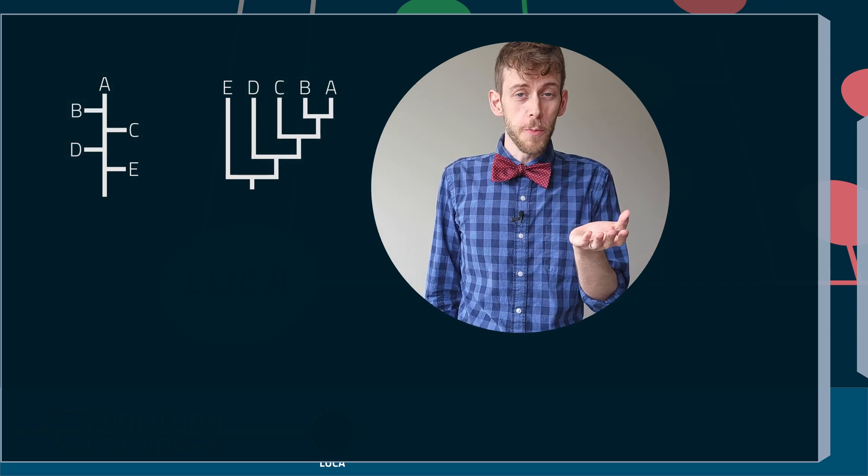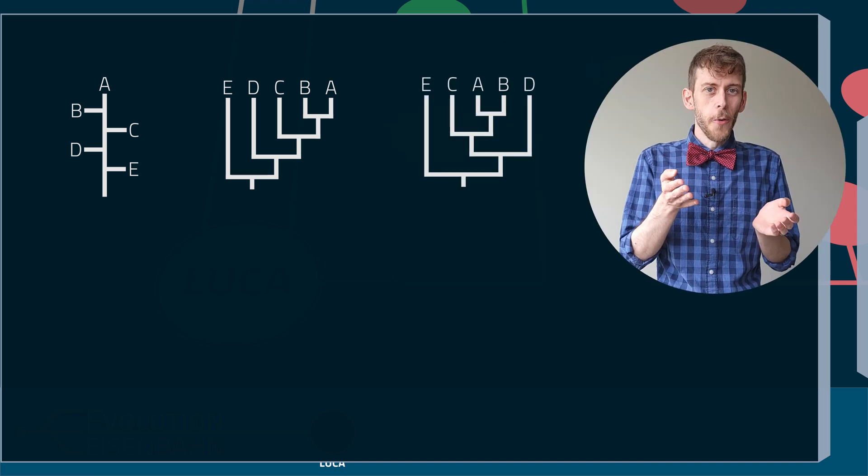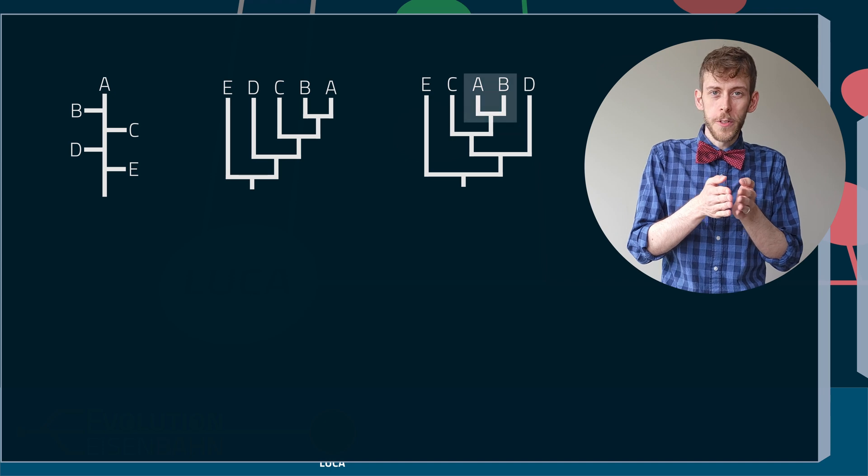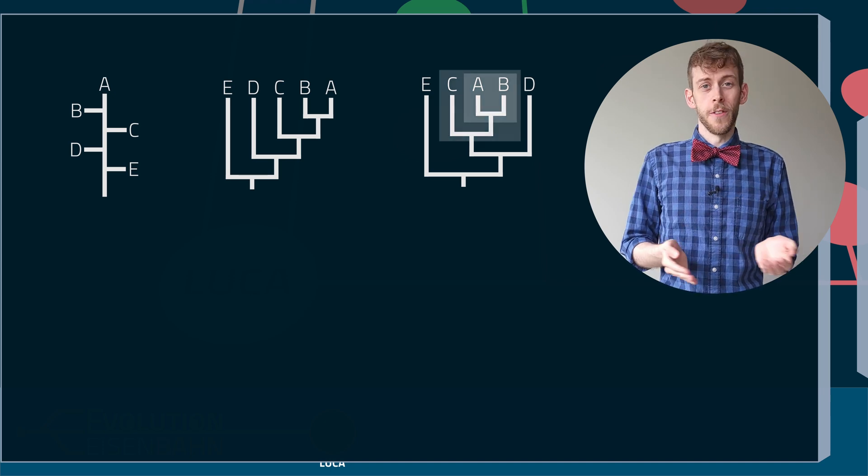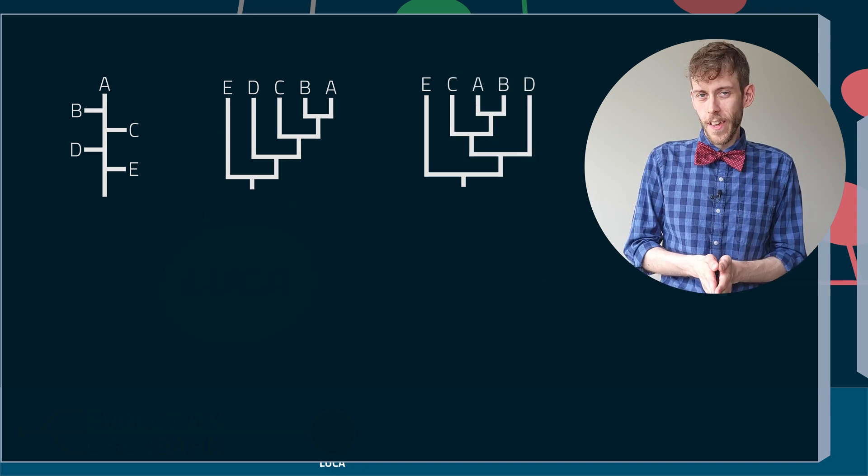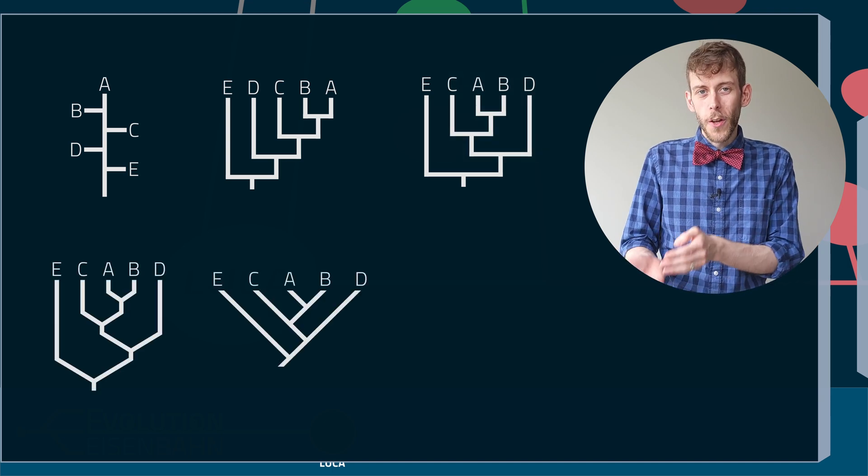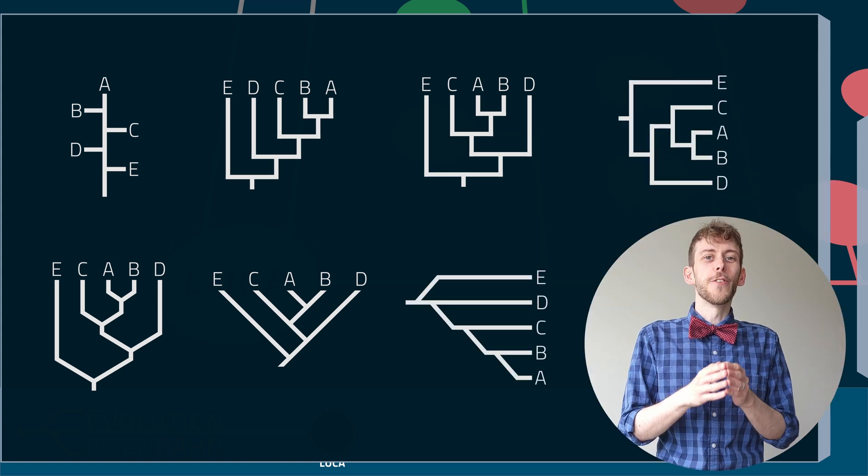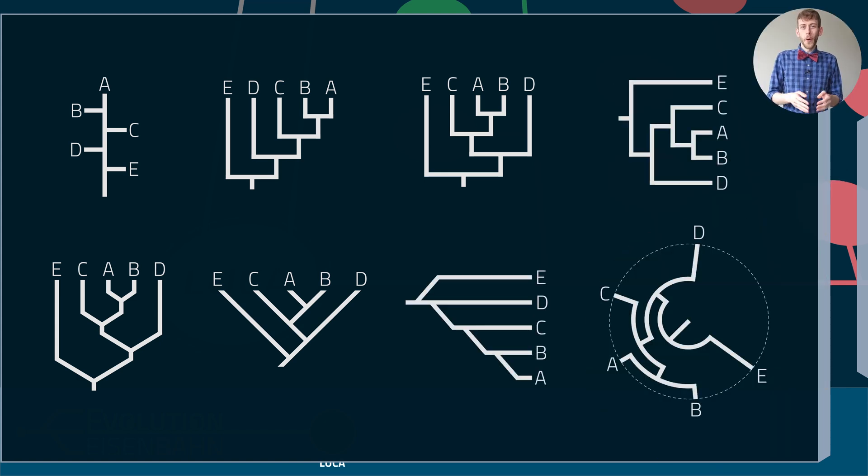And the order of the groups is also arbitrary. I can rotate some of these positions, and now this tree is still the same. A and B are sister groups, together most closely related to C, and so on. Of course it also doesn't matter what style I choose for the tree. I can draw it like this, or like this, or tilt it on the side. And one style that I particularly like is this circular style. All these trees are exactly the same.